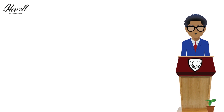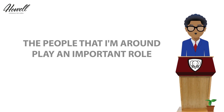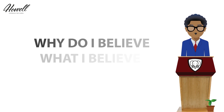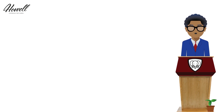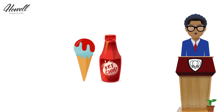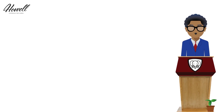Oftentimes, although we are experiencing the results of having a thought, the thoughts are not even our own. This means the people that you are around could play an important role in what you believe and why you believe what you believe — at the very least, it sympathizes you to certain perspectives that you may have otherwise avoided. For example, let's say you are around a group of friends that all put ketchup on their ice cream. All of your life, most of the people around you chose to eat ice cream in this way, and even if you didn't necessarily enjoy it, you are privy to that way of eating ice cream and don't really mind it after all that time.